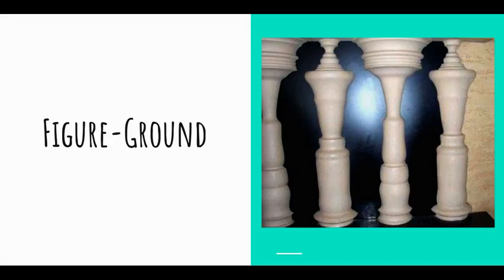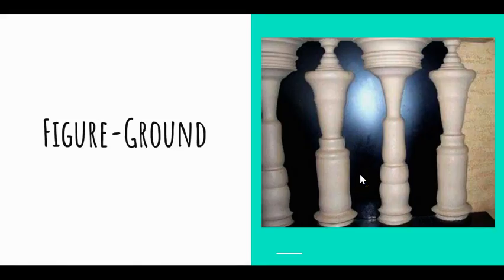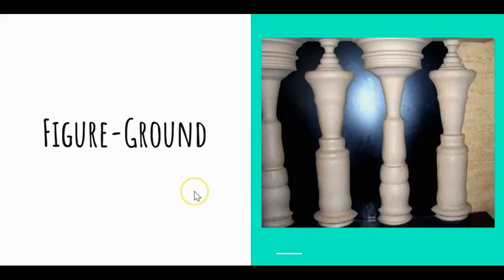When we are looking at visual stimuli, we always tend to pick out figures against the ground. This concept is called figure-ground. What we tend to look at and focus on becomes the figure, and everything else becomes the ground. If you look here, you might be focusing on these chess pieces — the black area becomes the ground, so the chess pieces are the figure. Or these black figures, which are outlines of people, might become the figure, and the white area becomes the ground.